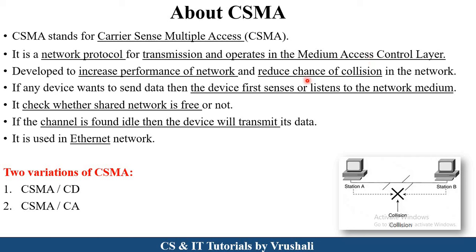In a computer network, there are multiple devices present. These devices perform sending and receiving operations. But sometimes two devices are connected by using the same channel and send the same information at the same time, so there are chances of collision. By using CSMA protocol, we avoid collision in the network, which increases network performance and also increases the accuracy of communication between sender and receiver. That's why CSMA protocol is used in Ethernet networks.